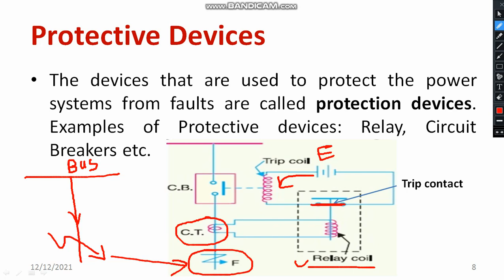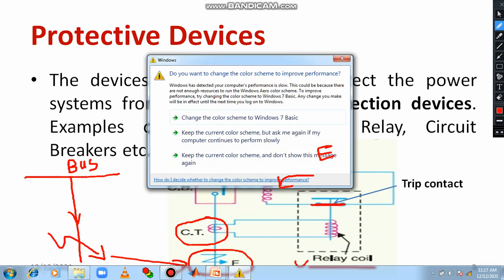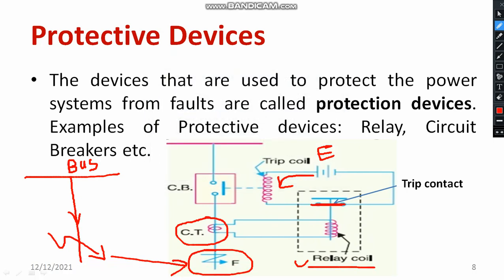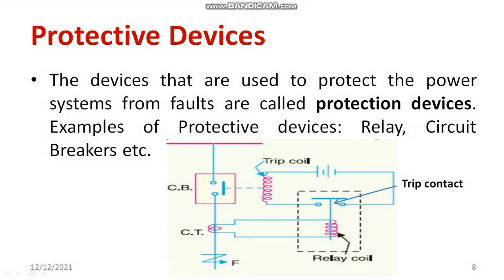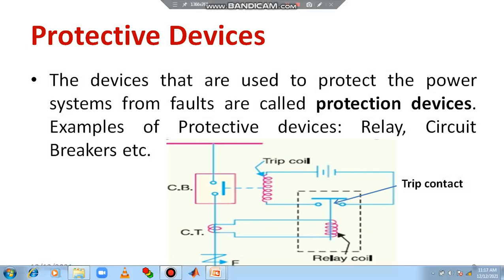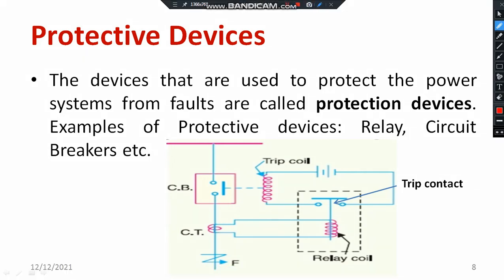Once the trip coil is energized, the circuit breaker contact — which is initially in the closed condition — gets opened. Once the CB contact opens, it acts as an open switch, so no current flows through that portion.